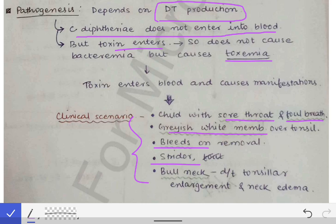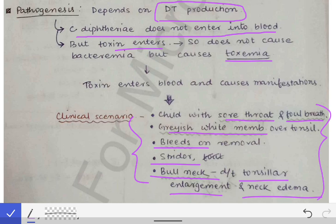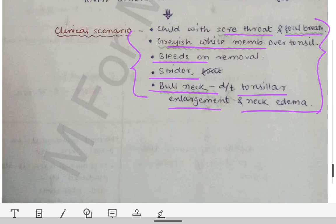There may also be bull neck. This occurs because the toxin reaches the lymph nodes and the tonsils, causing tonsillar enlargement and lymph node enlargement, along with edema from the toxin. Together, these create a swelling over the neck resembling a bull's neck — hence the term 'bull neck.' These are the clinical features of Corynebacterium diphtheriae causing faucial diphtheria.